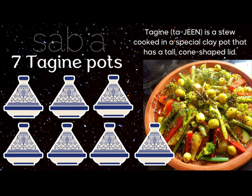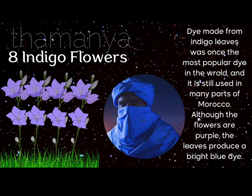Seven — sabah. Seven tagine pots. Tagine is a stew cooked in a special clay pot that has a tall, cone-shaped lid. This is a delicious dish — if you ever get a chance to try a Moroccan tagine, I highly recommend it.